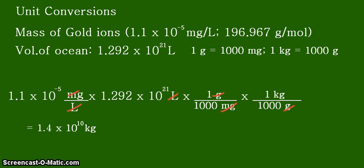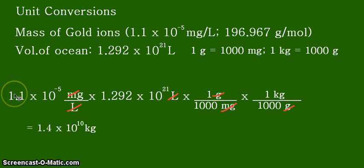After calculating all the values, we get 1.4 times 10 to the positive 10 kilograms. Before reporting your final answer, always check the correct number of significant figures based on the given data. The original calculation gives more digits, but we round to two significant figures to match the given, which has only two significant figures.